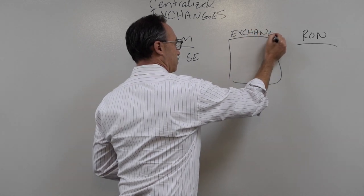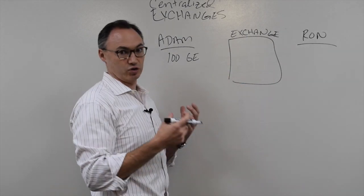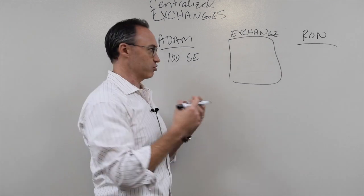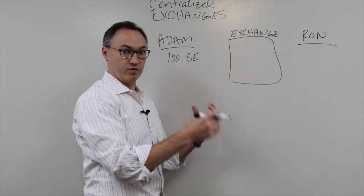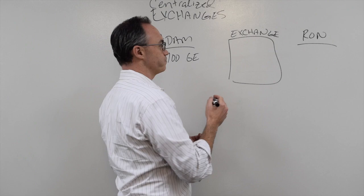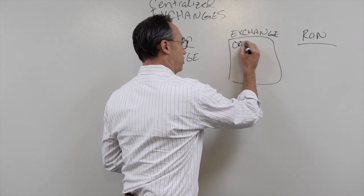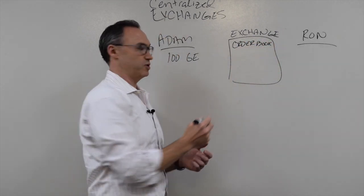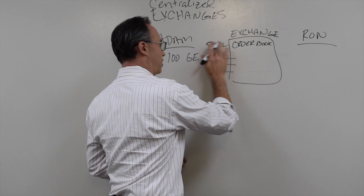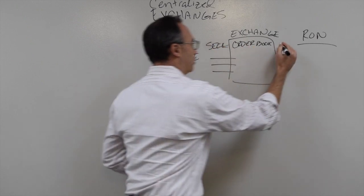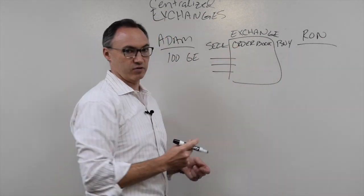So you create an exchange. It's no different than some sort of marketplace or bazaar where you can exchange goods, agricultural products, things people have made. It's basically a place where Adam and Ron's of the world can meet and actually exchange stock. On the exchange, you have what's called an order book. The order book is basically a listing of all the people who want to sell stock and all the people who want to buy stock.